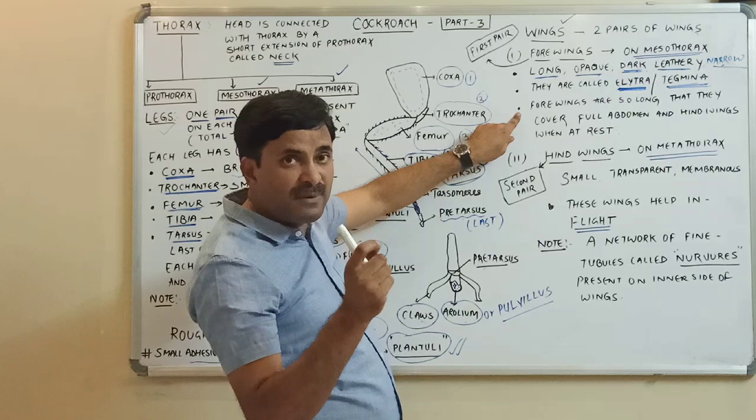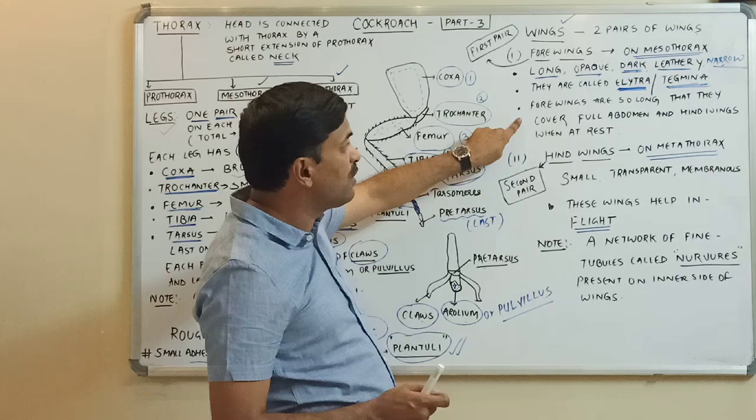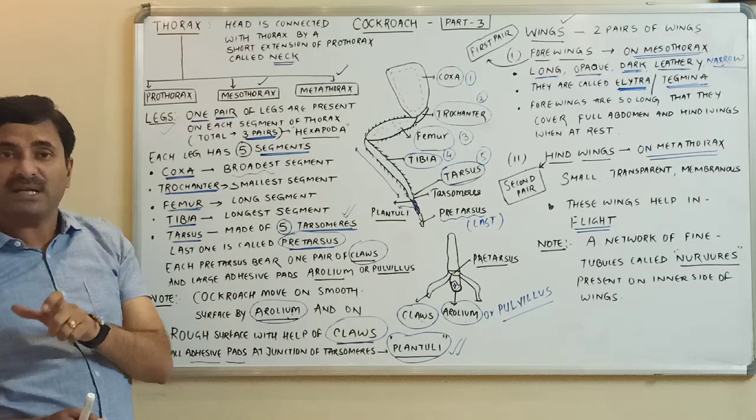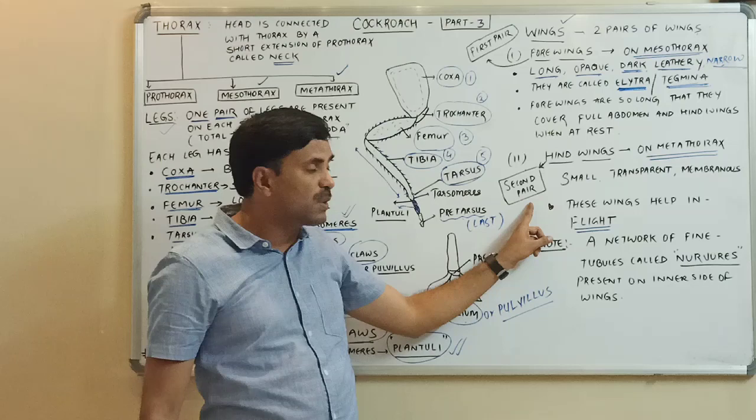The forewings are so long that when the cockroach is at rest, they cover the full abdomen as well as the hindwings. These forewings are not associated with flight.